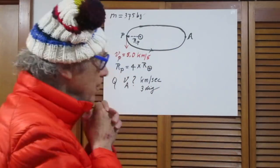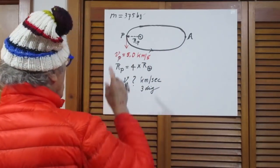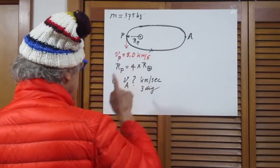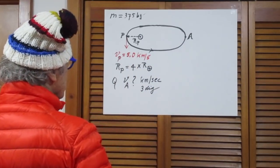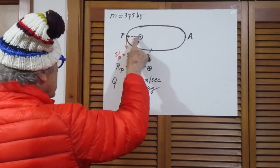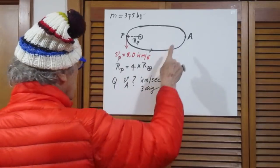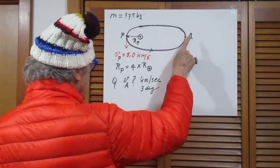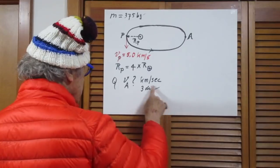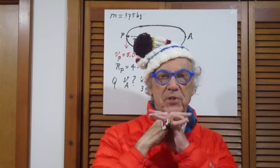Very simple. Elliptical orbit. At perigee, the speed is 5.0 kilometers per second. The distance from perigee to the Earth's center is 4 times the radius of the Earth. What is the speed at apogee in kilometers per second? And I would like to see three-digit precision.